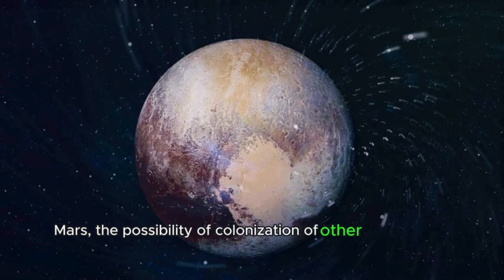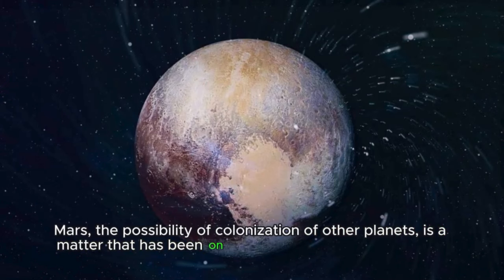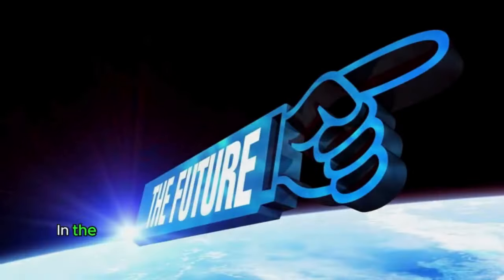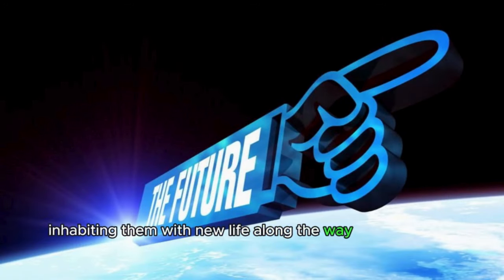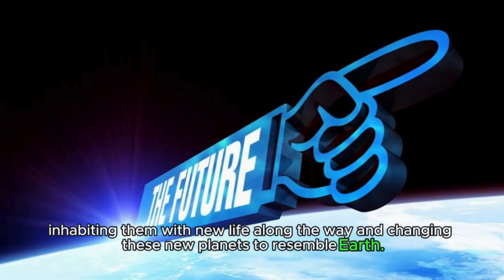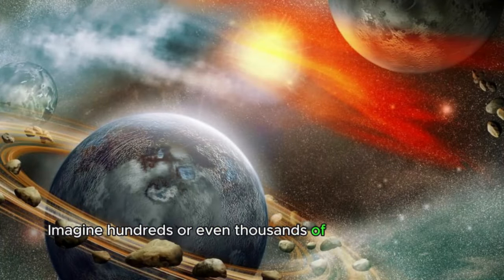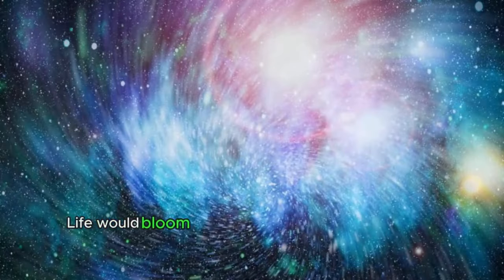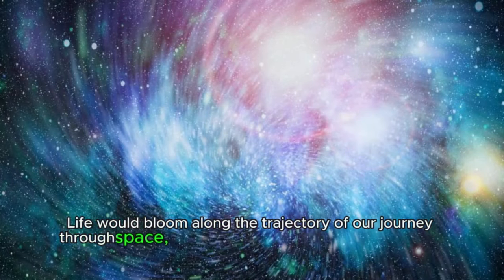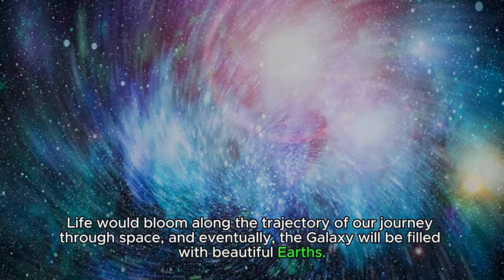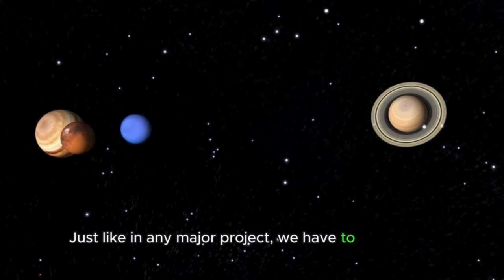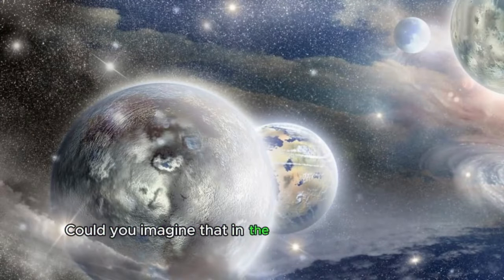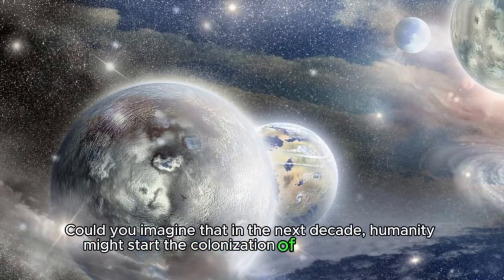Mars, the possibility of colonization of other planets is a matter that has been on people's minds for many years. In the future, once we can travel through space, we will move forward from one world to the next, inhabiting them with new life along the way and changing these new planets to resemble Earth. Imagine hundreds or even thousands of planets colonized by humans. Life would bloom along the trajectory of our journey through space, and eventually, the galaxy will be filled with beautiful Earths. But how can we achieve a result like that? Just like in any major project, we have to start small. Could you imagine that in the next decade, humanity might start the colonization of our solar system?